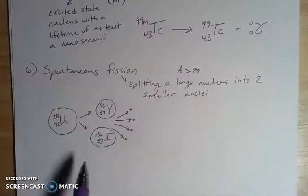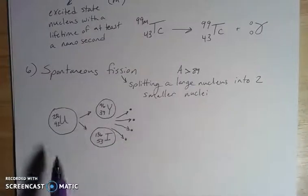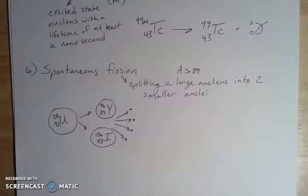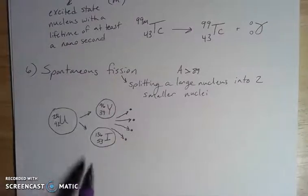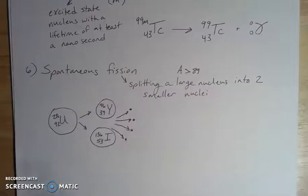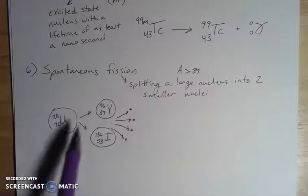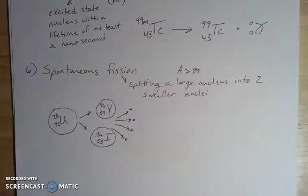This model, by the way, that shows fission in general is a model that was proposed by Niels Bohr of the Bohr model fame of the atom, which we usually think about in terms of electrons. But he also was the one who thought about fission. It's called the liquid drop model because it kind of looks like a droplet that is splitting into two smaller droplets. So he had a model for everything, Niels Bohr, quite a genius.